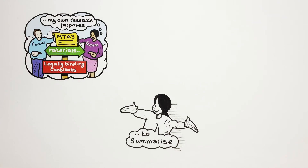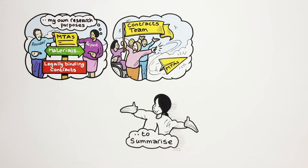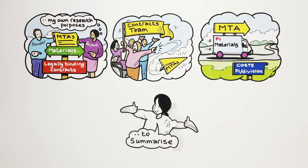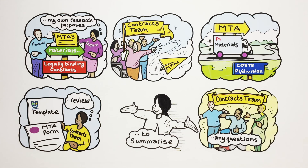To summarise, MTAs are contracts that govern the transfer of materials from a provider to a recipient who intends to use it for their own research purposes. They are legally binding contracts. We have a great contracts team that will help turn MTAs around quickly for you. Upon execution of an MTA, the PI will be responsible for any transport or delivery arrangements of the materials. Costs associated with this must be met by the PI or their division. We would prefer that you use one of the University of Glasgow MTA templates; however, a company or other institution may ask that you use their MTA form. If you are compelled to use a non-University of Glasgow MTA, the contracts team can review this for you. Remember that the contracts team is on hand to help you with any questions that you may have.